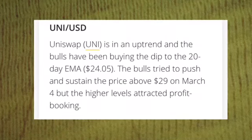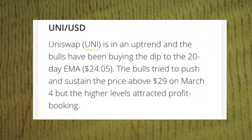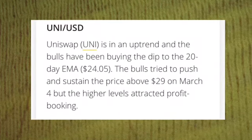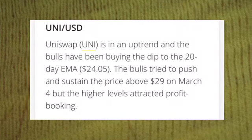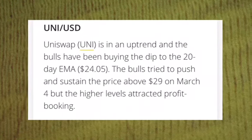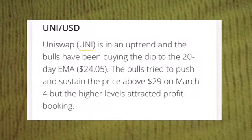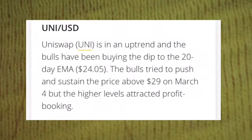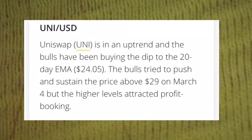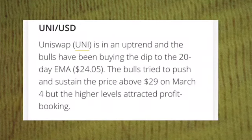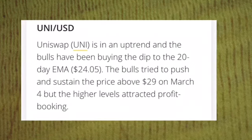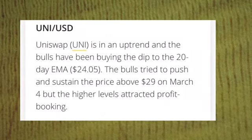Uniswap, or we call it UNI, is in an uptrend and the bulls are buying the dip to the 20-day EMA at $24.05. The bulls tried to push and sustain the price above $29 US dollar on March 4, but the higher level attracted profit booking.